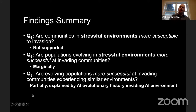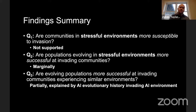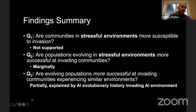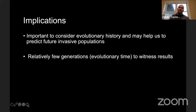To summarize, with all the caveats of what we still have left to explore: are communities in stressful environments more susceptible to invasion? Not supported. Are populations evolving in stressful environments more successful at invading communities? We're marginally hinting at something there. Are evolving populations more successful at invading communities experiencing similar environments to which they evolved? That is supported, and it's explained by those evolving in aluminum invading aluminum. Potential implications: it is important to consider evolutionary history when thinking about what drives invasion success. We need to think about hotspots — environments that are a little more disturbed right now. Also notably, this occurred over relatively few generations, and if we had let this play out longer, we would have seen even stronger results.